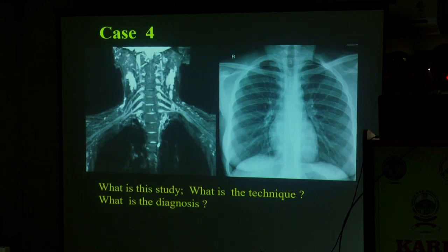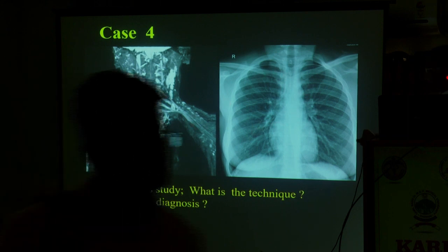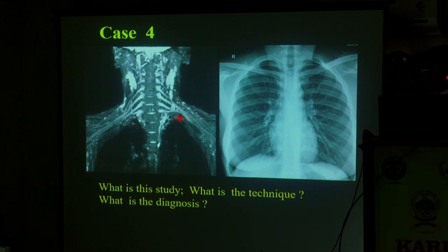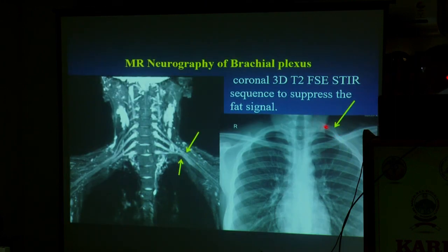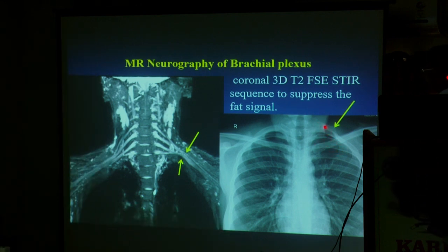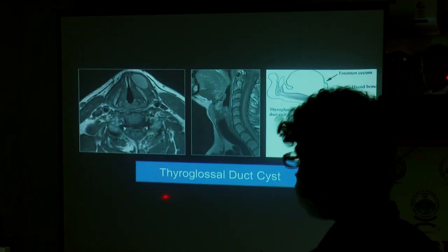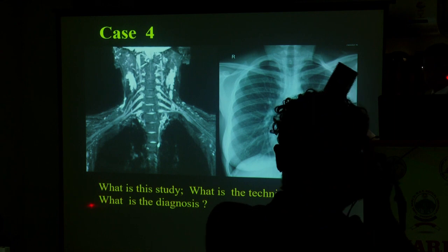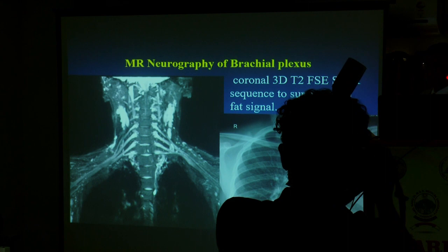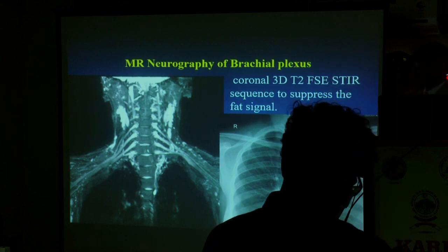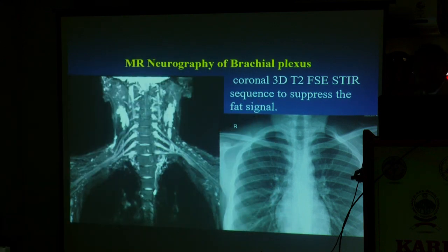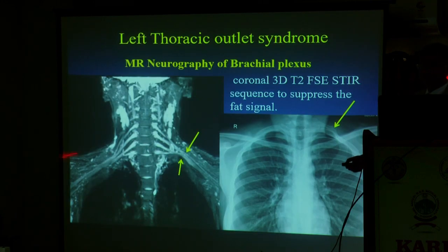What is the abnormality? There is something abutting and angulating the lower trunk and divisions of the brachial plexus. Why the angulation? Look at the area — there is an abnormal rib: a cervical rib causing traction on the brachial plexus. So, you have to answer three things: what is the study — MR neurography or brachial plexus; the technique — 3D T2 fat suppression; and the diagnosis. Everything within three to four minutes.